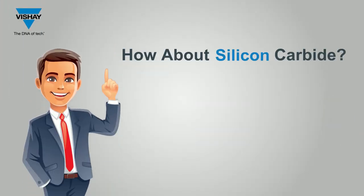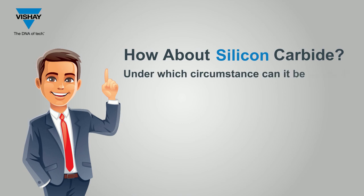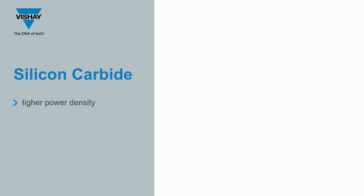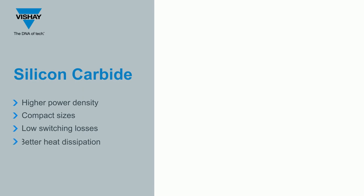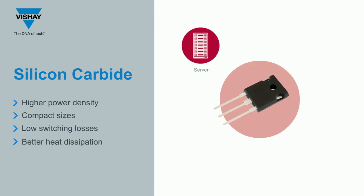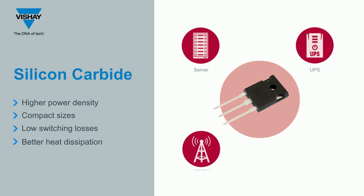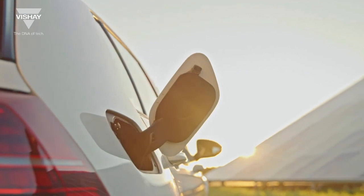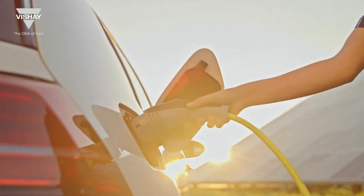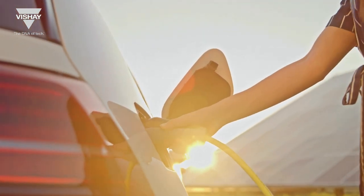How about silicon carbide? Under which circumstances can it be applied? Silicon carbide devices are characterized by higher power density, compact sizes, low switching losses and better heat dissipation. The diodes' applications include servers, UPS, telecom and solar inverters. These technologies support the most compact designs with higher power density and efficiency.